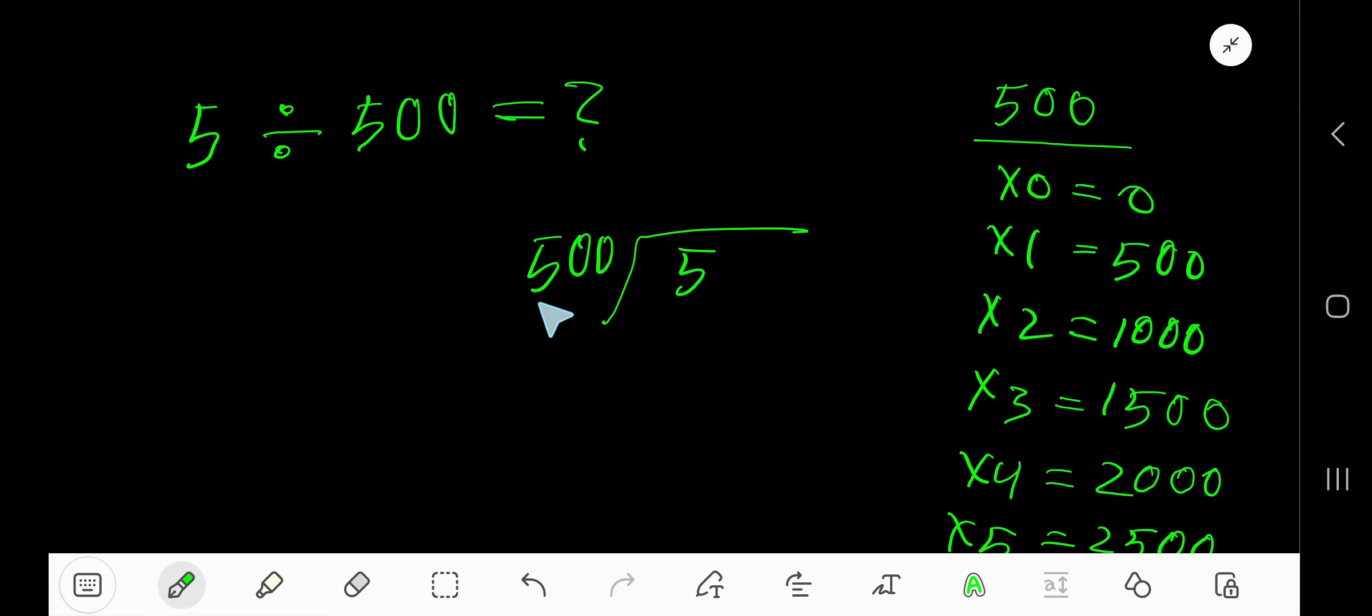5 divided by 500. Here 500 is a divisor, so we need the multiplication table of 500. 500 times 0 is 0, 500 times 1 is 500, 500 times 2 is 1000, 500 times 3 is 1500, 500 times 4 is 2000.